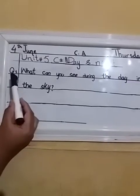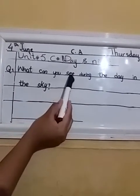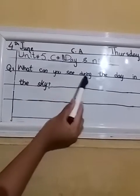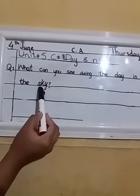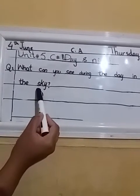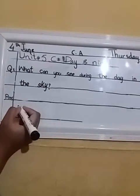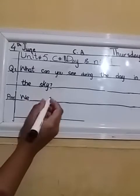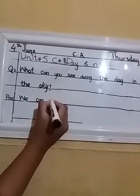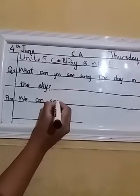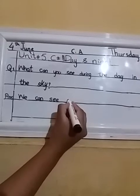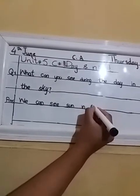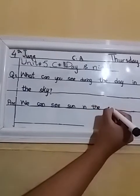The first question is: What can you see during the day in the sky? Repeat — what can you see during the day in the sky? This means: during the daytime, what do we see in the sky? The answer we will write is: We can see — one finger gap — we can see sun, s-u-n, in the sky.